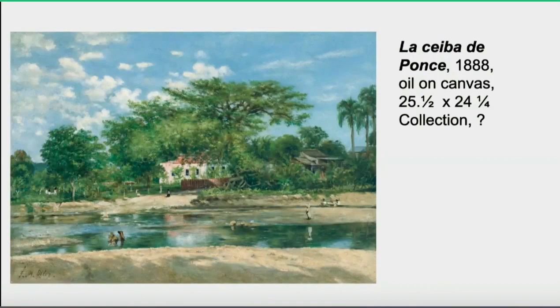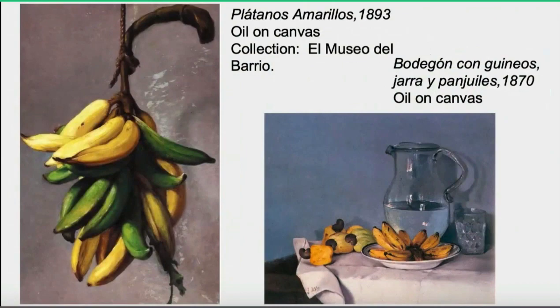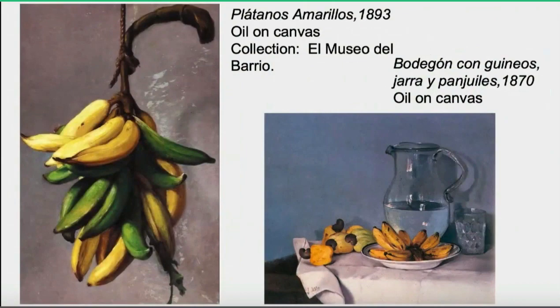He went back and forth between Paris and Puerto Rico, and when he landed in Puerto Rico in the 1880s, he decided to paint his own country, his own island. This is called 'La Ceiba de Ponce' — a very famous ceiba tree in Puerto Rico. I did hear that it recently died in 2021, but it was an iconic work. He brought back Impressionist influences: the interest in light and painting outdoors. He was also very interested in the vegetation. This iconic work, 'Plátanos Amarillos,' is an oil on canvas at El Museo del Barrio — not on view right now, but they do rotate it. And 'Bodegón con Guineos, Jara y Naranjas' from 1870. He became very interested in his own country.